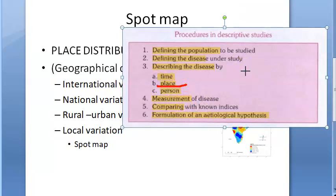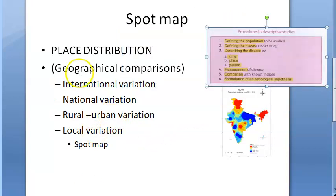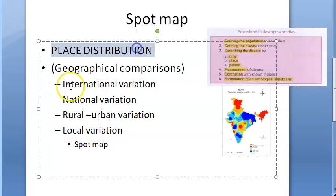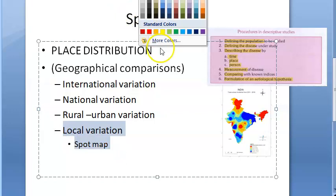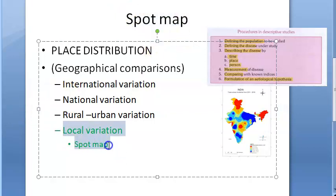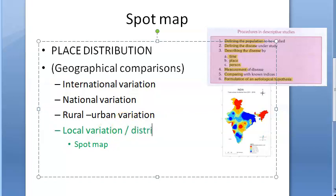Here we are looking at place distribution of the disease in an epidemiological study. Under place distribution — that is, geographical comparisons — you have international variation, national variation, rural-urban variation, and local variation. This is where the spot map or shaded map comes in: under local distribution of the disease, local variation.